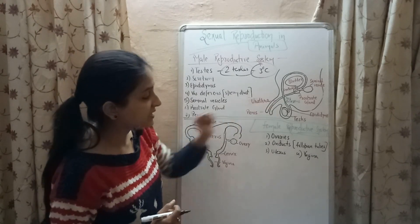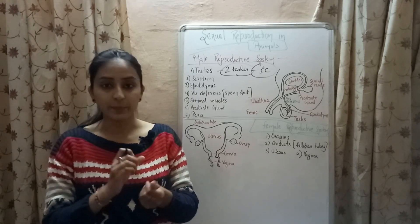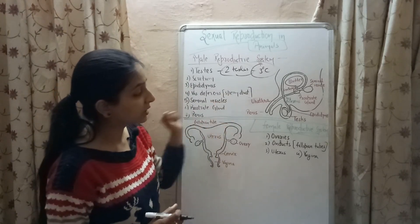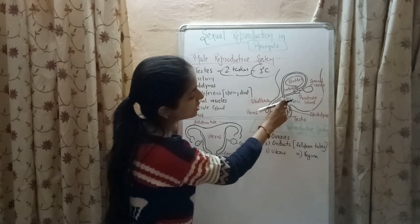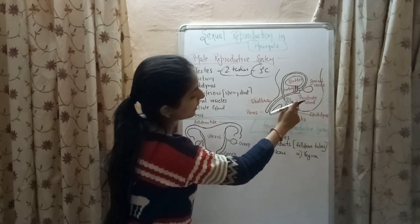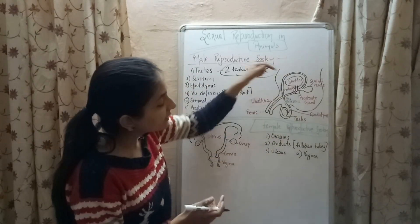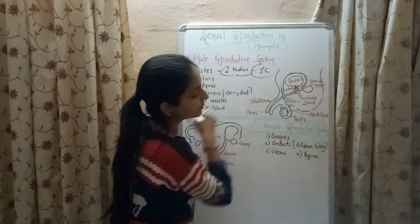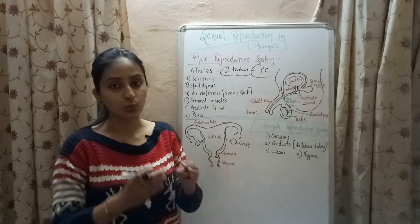The sperms produced by the testes are released into a coiled tube known as the epididymis, where the sperms are temporarily stored. From the epididymis, the sperms are passed on to a long tube known as the vas deferens or sperm duct. This vas deferens is connected to the urethra, which is a tube coming from the bladder. The vas deferens combines with the urethra, and this common passage now contains both urine from the bladder and sperm from the vas deferens. Along the path of the vas deferens there are two glands known as the seminal vesicle and prostate gland.